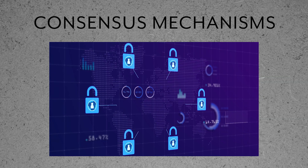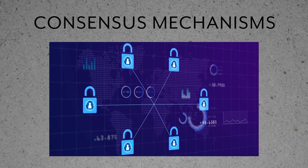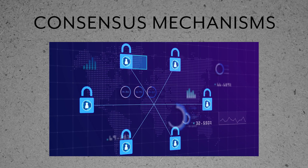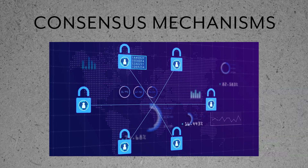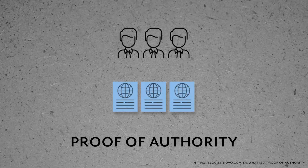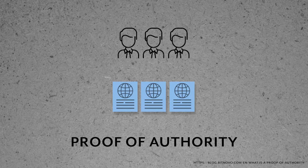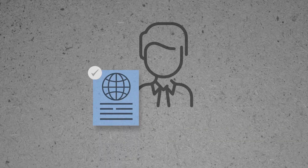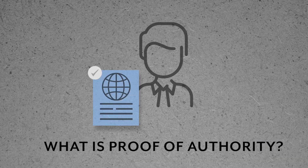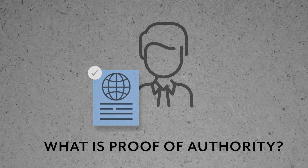Consensus mechanisms are a way to allow a network of computers to work together and uphold the blockchain. You might have heard of proof of work or proof of stake, but proof of authority is a little bit different and less known. In order to understand what proof of authority is and its benefits, let's look into proof of work and proof of stake consensus mechanisms.